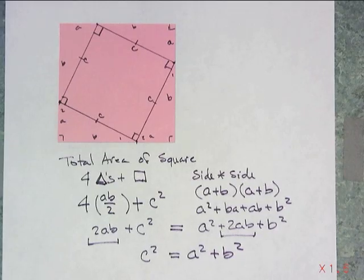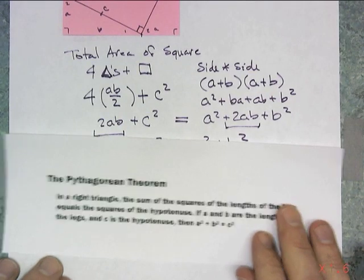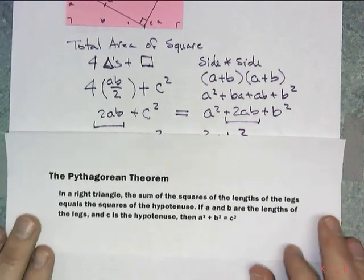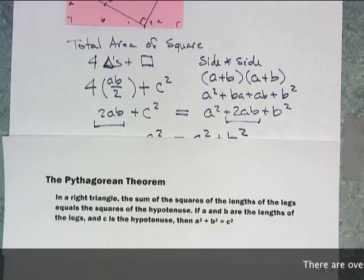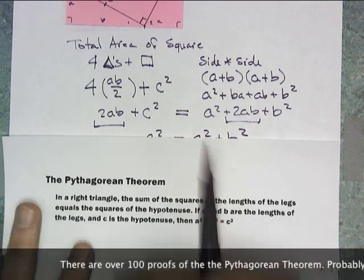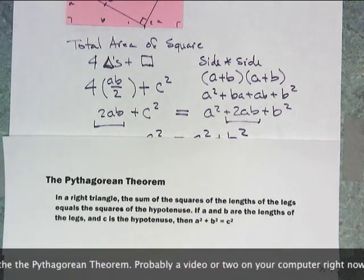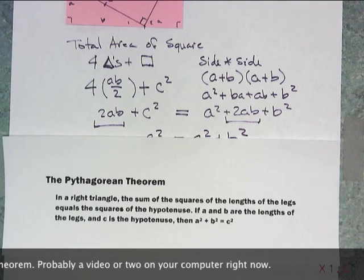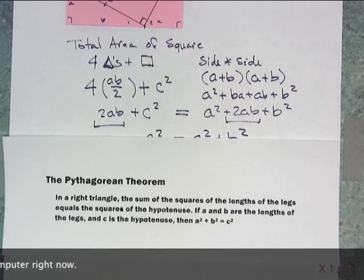And the Pythagorean Theorem states, for all of you that were waiting patiently, I understand. It says the Pythagorean Theorem in a right triangle is the sum of the squares, the lengths of the legs equals the square of the hypotenuse. If A and B are the lengths of the legs, then C must be the hypotenuse. Then A squared plus B squared equals C squared.